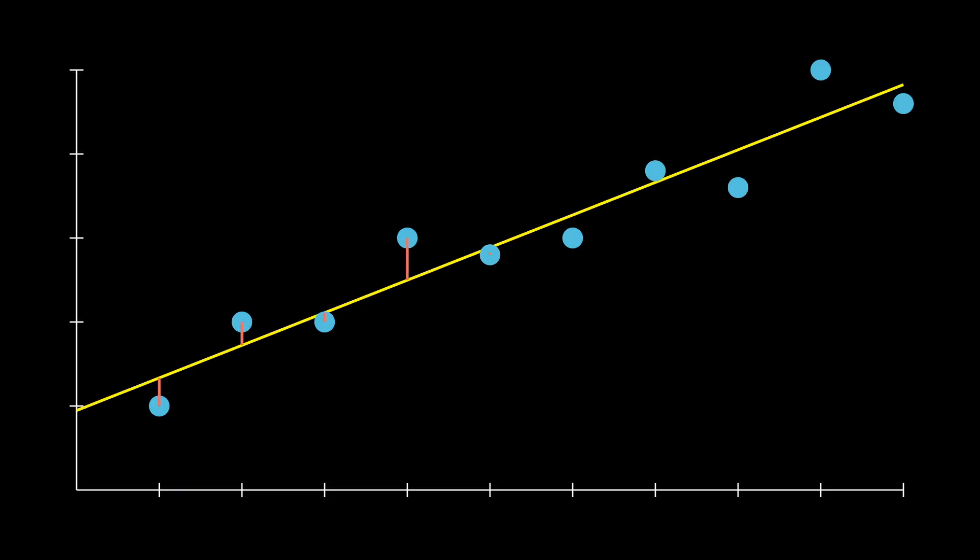So how do we fit the line to these points? Well, you'll notice that there's these differences between the points and the line, these little red segments. These are called residuals. They are the differences between the data points and the predictions the line would produce. Take each of these residuals and square them. These are the squared errors, and notice that the larger the residuals are, the more amplified the area of the squares are.